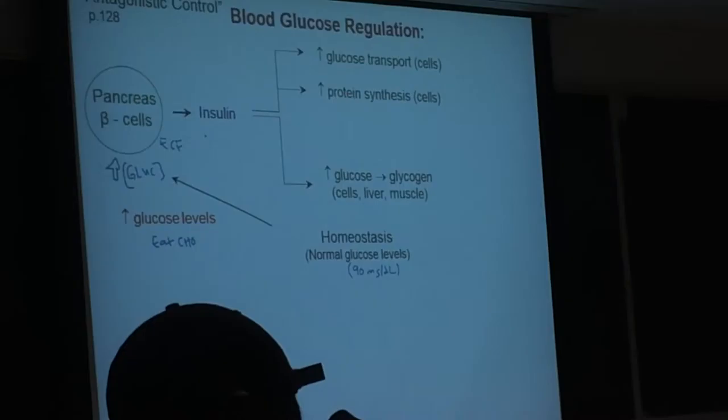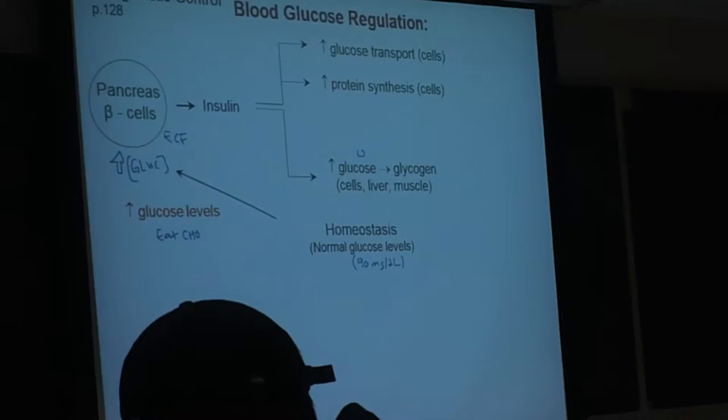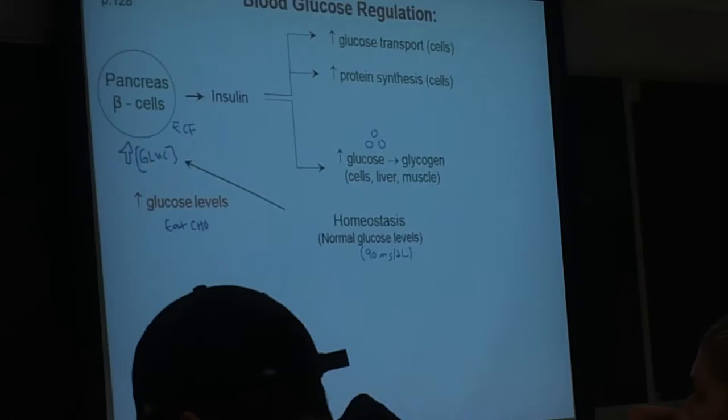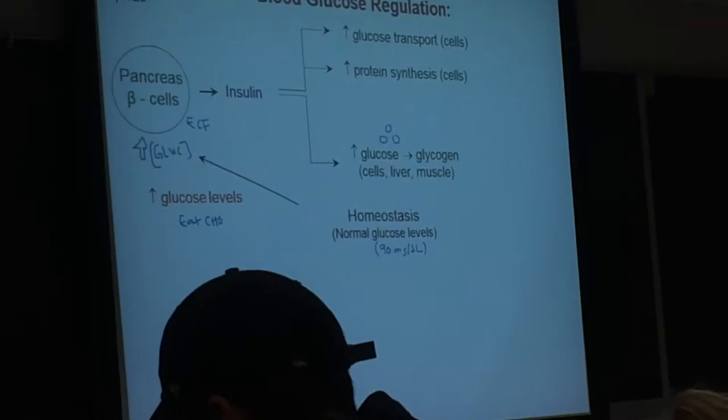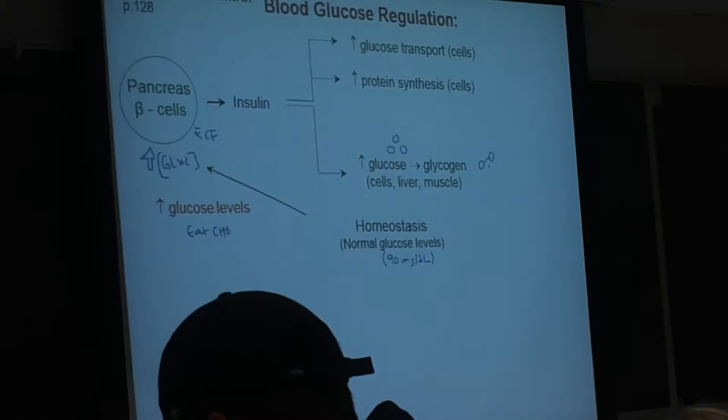And then in cells that are capable of storing away glucose as glycogen, and that would be mainly liver and skeletal muscle cells, those enzymes that convert glucose into glycogen, they get acted on through insulin. And you guys remember, do you remember kind of like the basic chemistry of what glycogen looks like? Yeah, just chains.